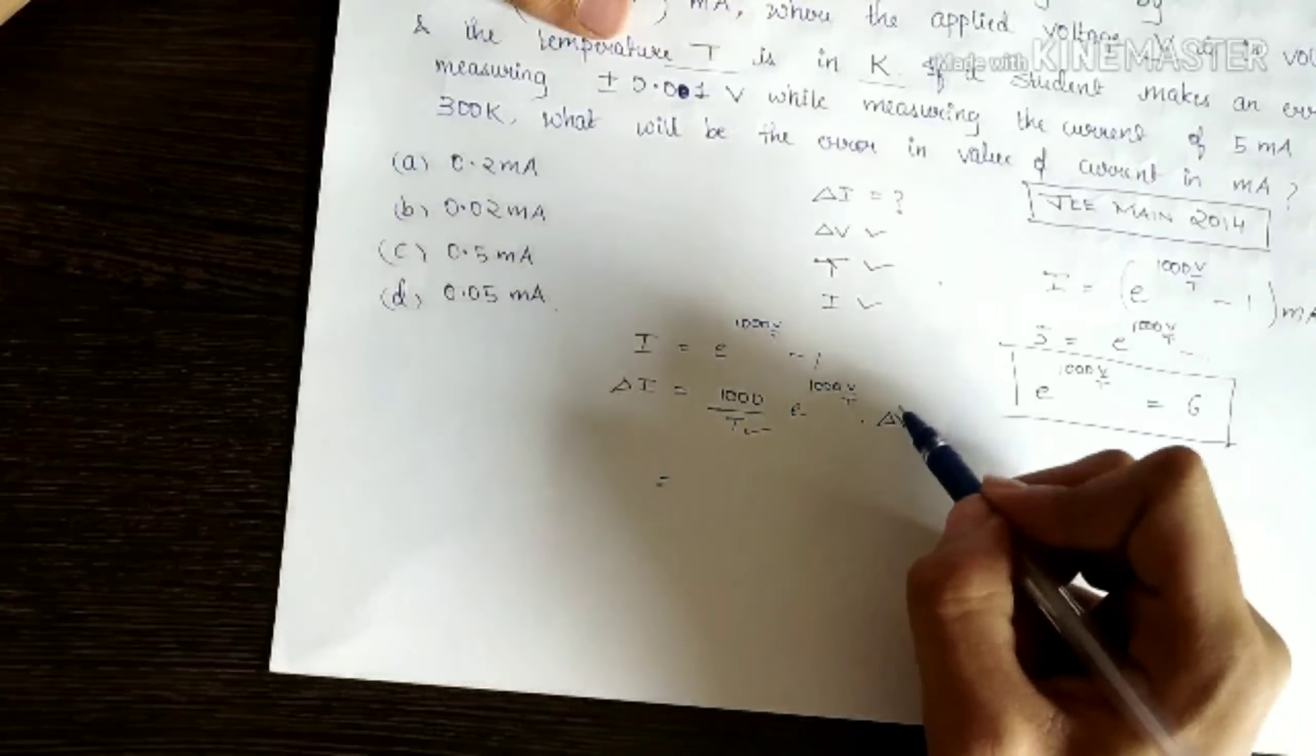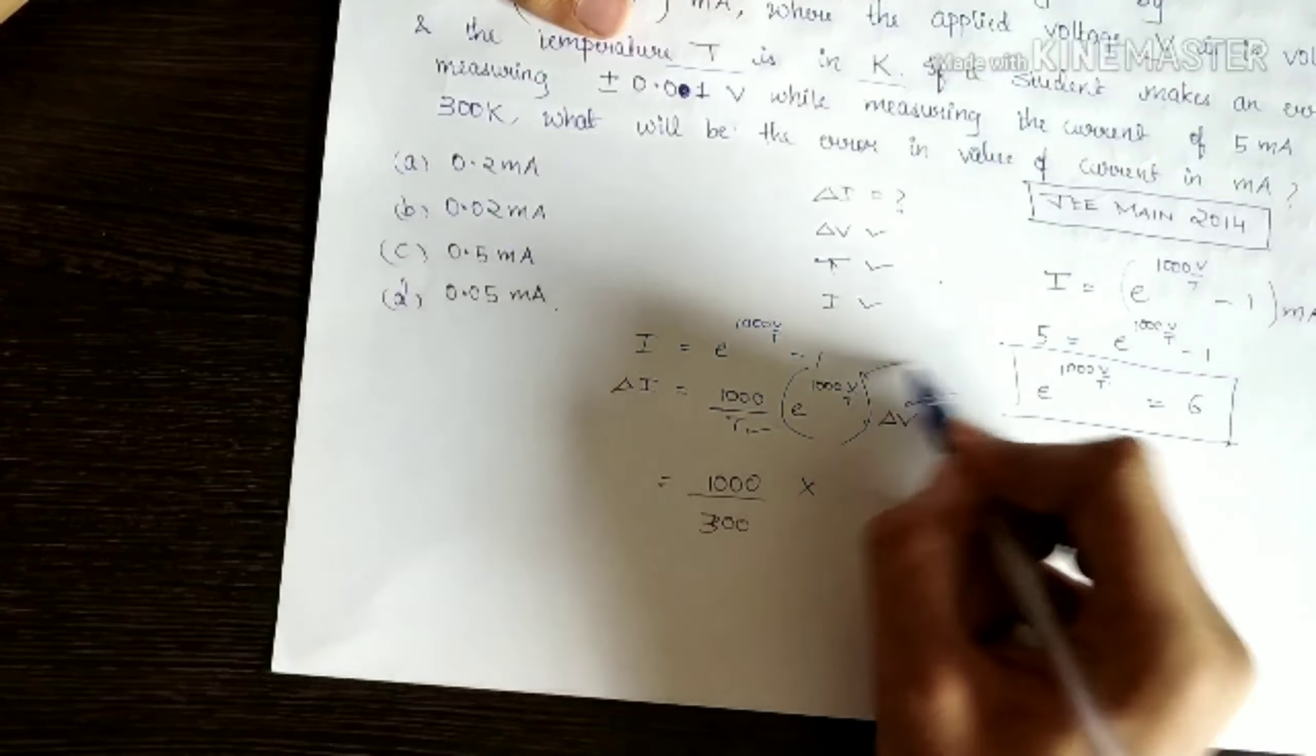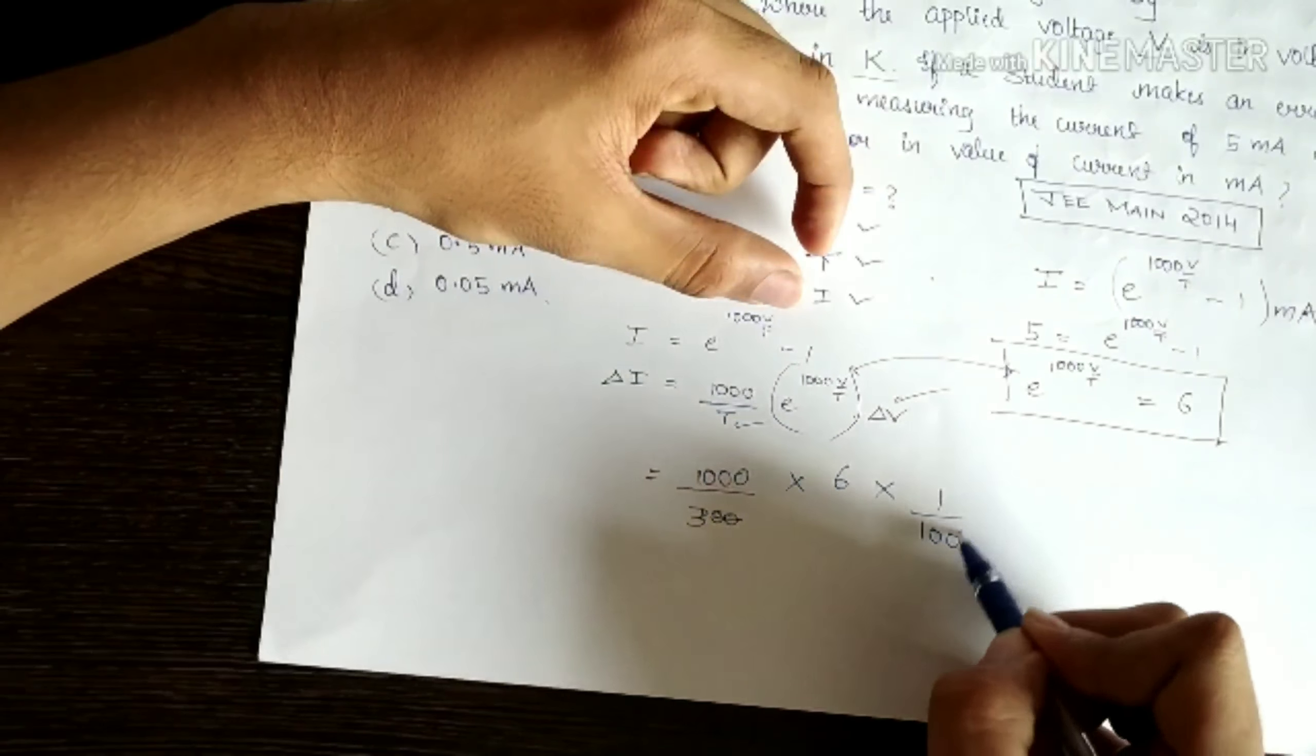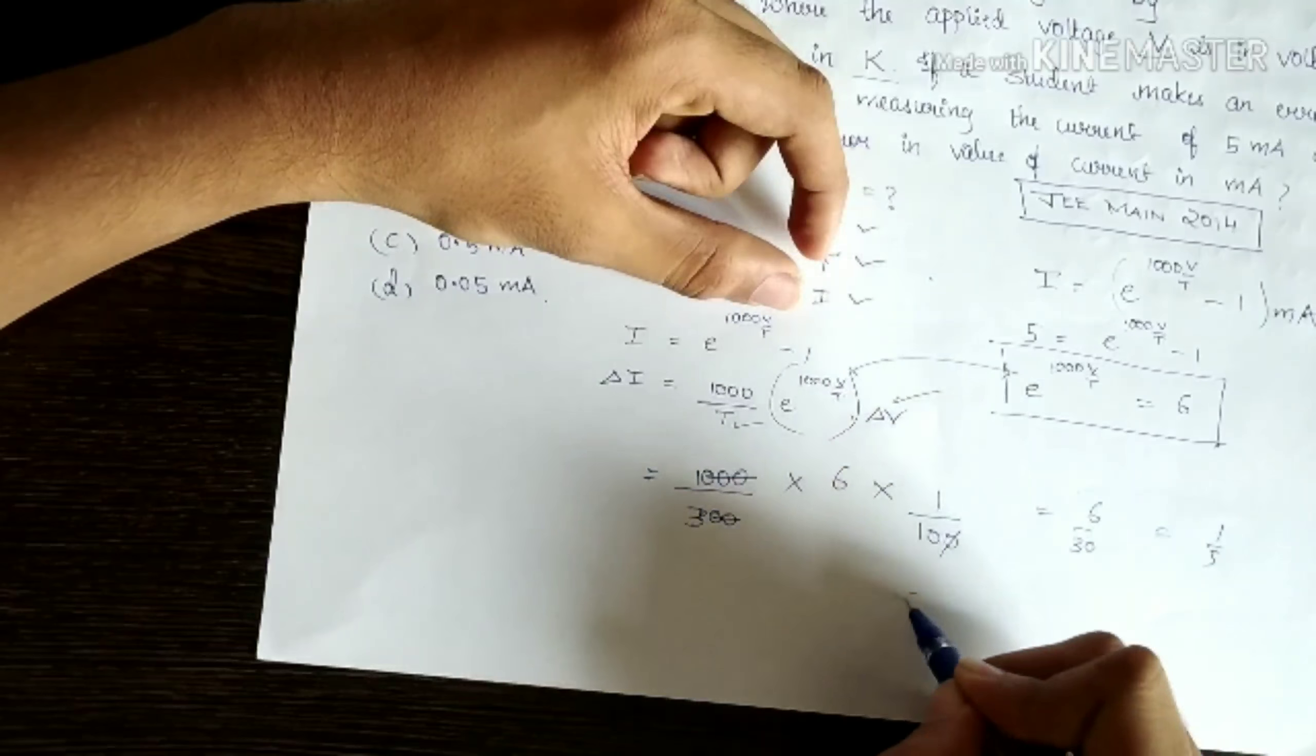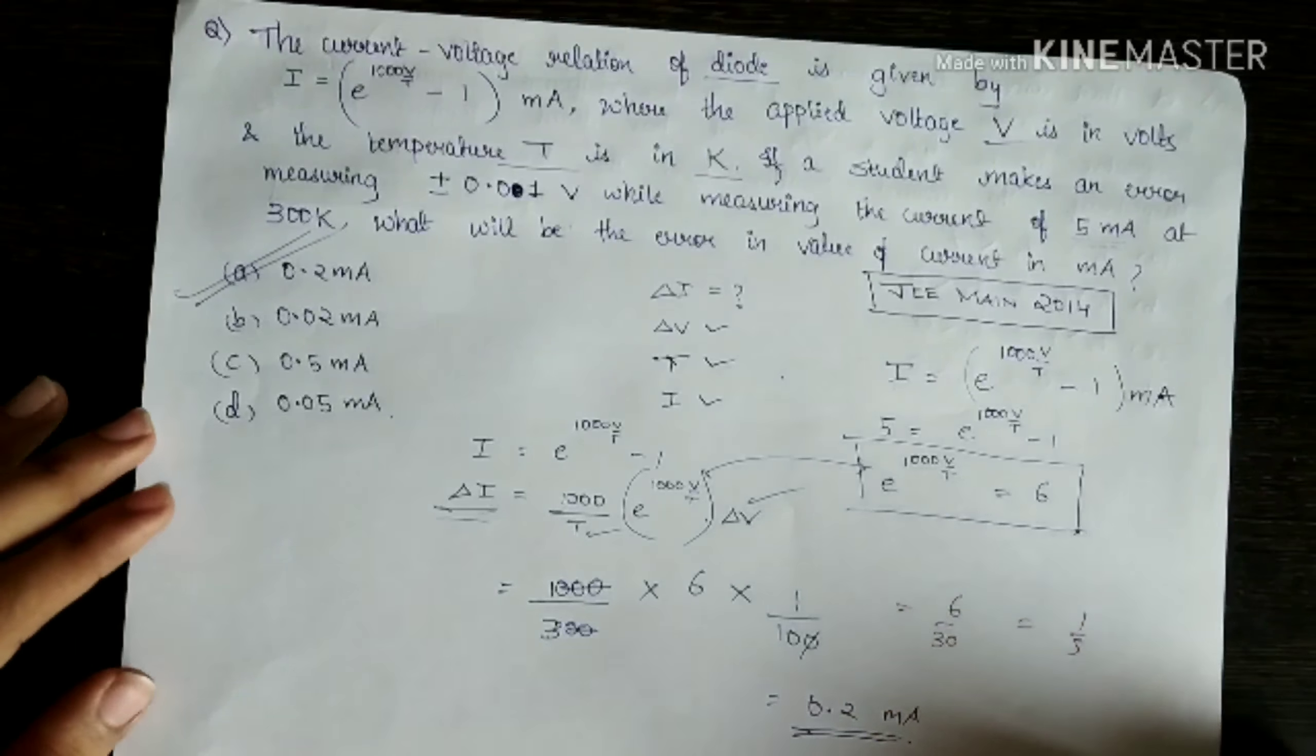Clearly, I have temperature value, delta V value and I have this value. Can't I find delta I easily? Yes, I can. 1000 divided by temperature 300 times this value which is 6 times delta V. Delta V is 0.01, that is 1/100. Just cancel out things. Two zeros and one from here go away. And I have 6/30, which is 1/5, which is 0.2. It should be in milliamps because we are measuring delta I and hence our option will be A. I hope you understood how to do this question. Let's see the next one now.